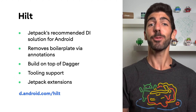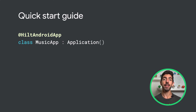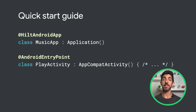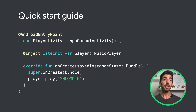Let's see how to get started with Hilt in your app. All apps that use Hilt must contain an application class annotated with @HiltAndroidApp, since it triggers Hilt's code generation at compile time. For Hilt to be able to inject dependencies into an activity, the activity needs to be annotated with @AndroidEntryPoint. To inject a dependency, annotate the variables you want Hilt to inject with @Inject. All Hilt-injected variables will be available when super.onCreate is called. In this example, we are injecting a MusicPlayer into PlayActivity.